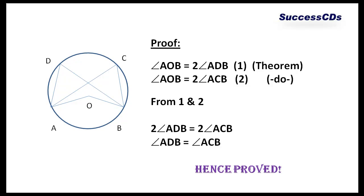Now from statements 1 and 2, both are equal to angle AOB. Therefore both of them must be equal to each other as well. That means 2 times angle ADB is equal to 2 times angle ACB. This implies angle ADB and angle ACB are equal to each other. Hence proved.